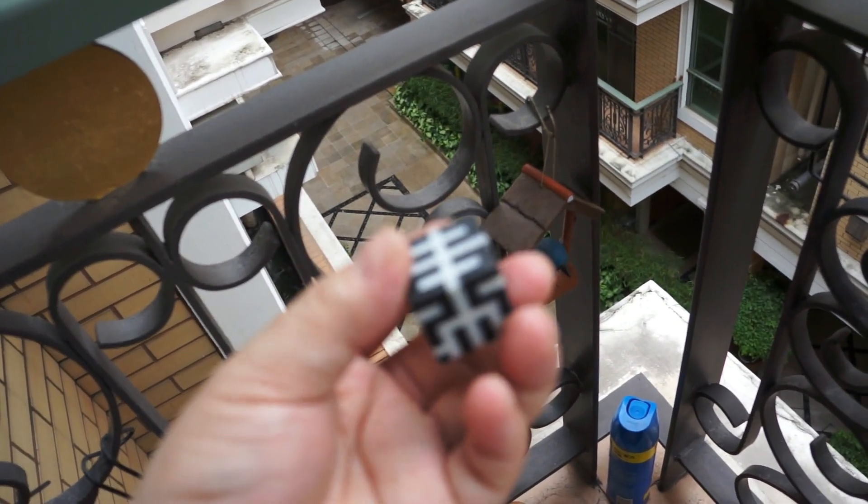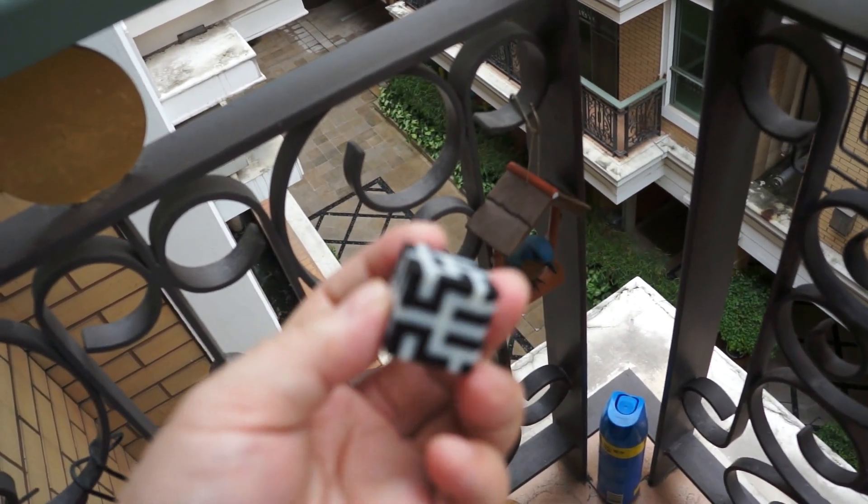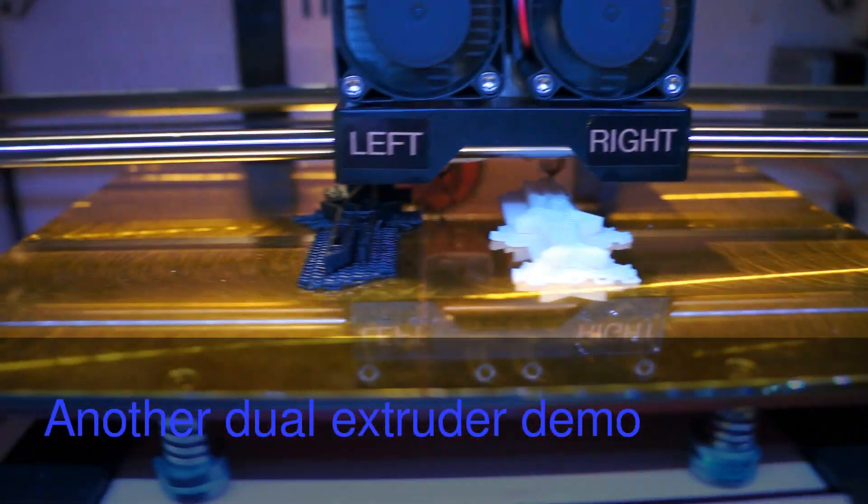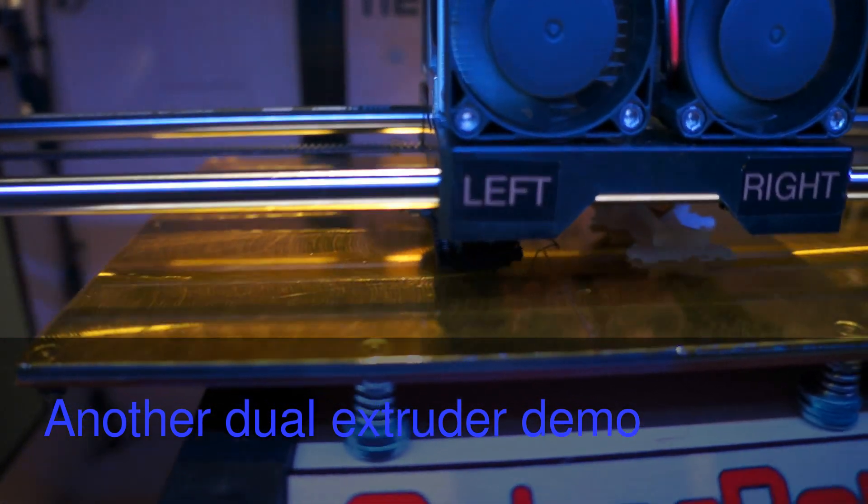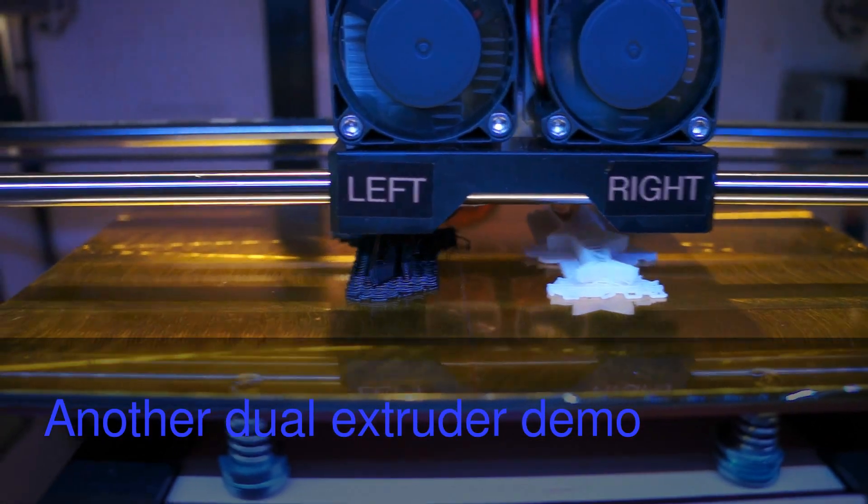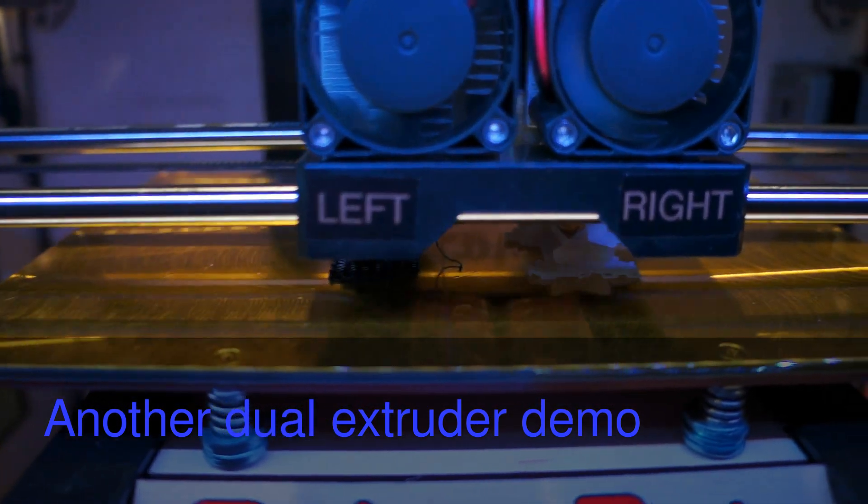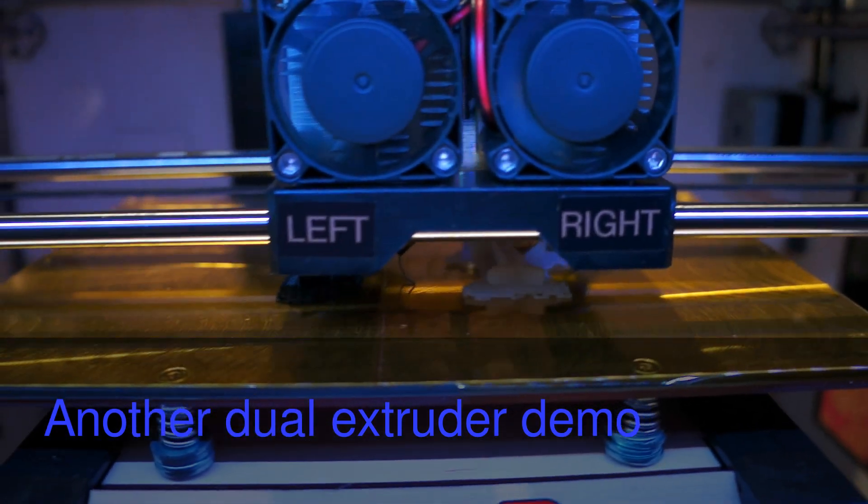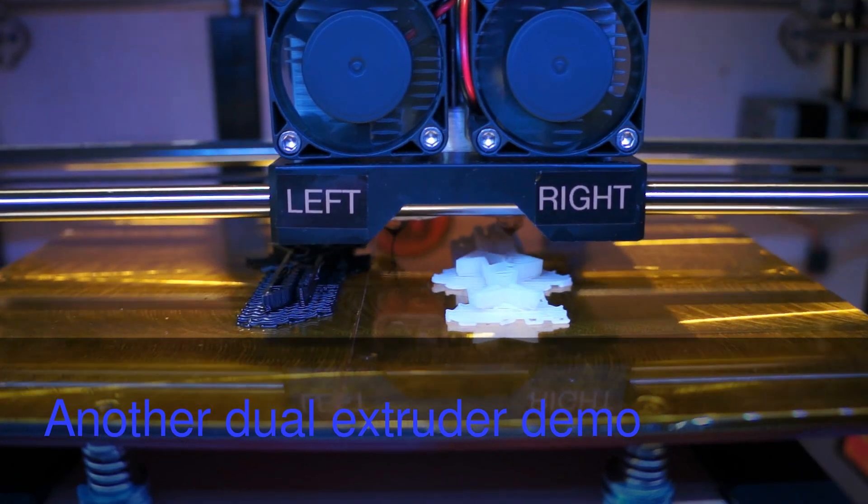And coming up next I will try another dual extruder example by the replicator. So this is another example by the dual extruder. And you can see there's two color tone black and white. And using left for the black and right for the white color.